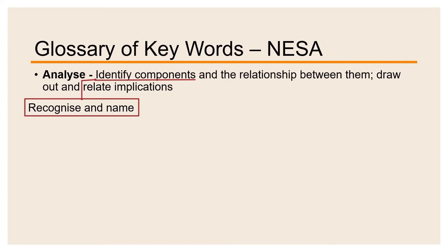So we have to recognise and name the components. Components are the bits, the parts, the things that make up the text as a whole. However it's not enough to just be able to recognise and name the components, we also have to be able to identify the relationship between them. How do the parts work together to construct the text that we are analysing?